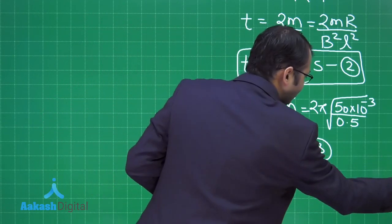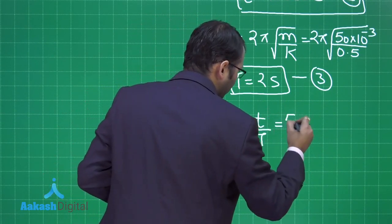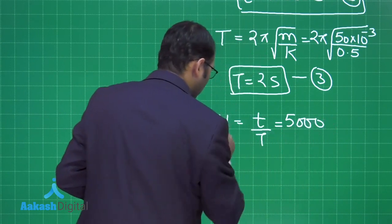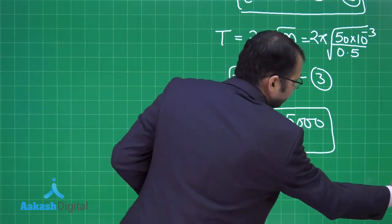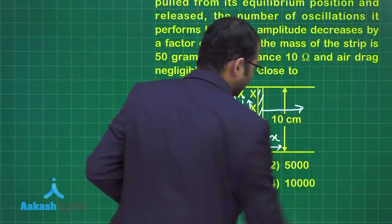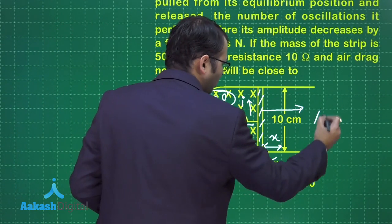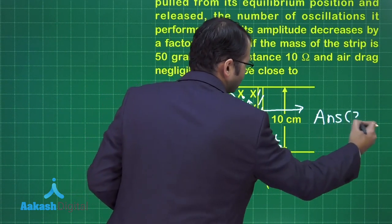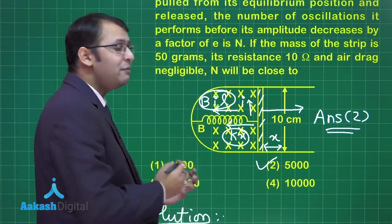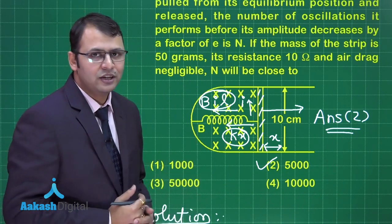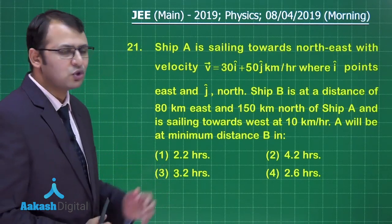Now we have two key values: total time t equals 10,000 seconds and time period T equals 2 seconds. The number of oscillations n equals t divided by T, which equals 5000. So roughly 5000 oscillations are performed before the amplitude decreases by a factor of e. The answer is option number 2.